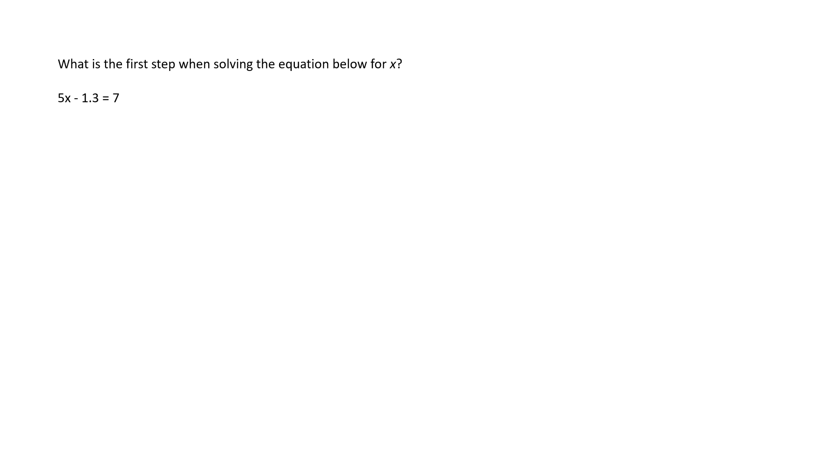What is the first step when solving below for x? So you've got 5x minus 1.3 equals 7.